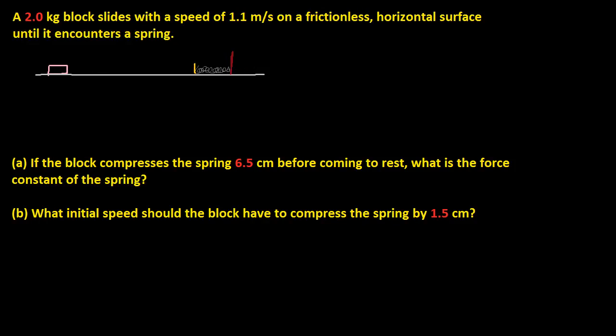So now we have this block that's going this way. And then it encounters this and then it comes to a stop. So basically what this is saying is, from here, this is the resting position of the spring. And from here to here, this is 6.5 centimeters, or 0.065 meters. You just divide by 100 to convert from centimeters to meters. Now what is the force constant of the spring?